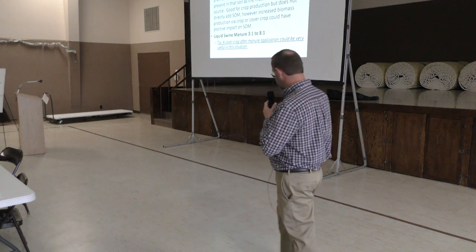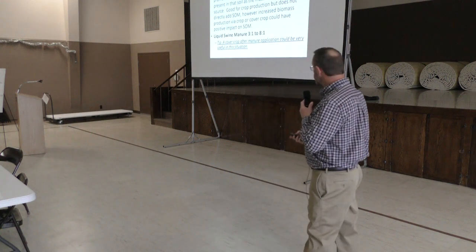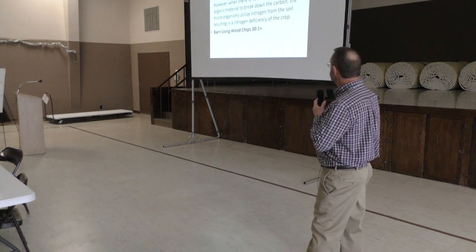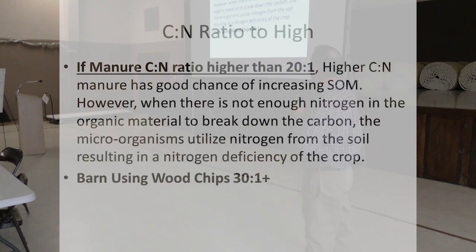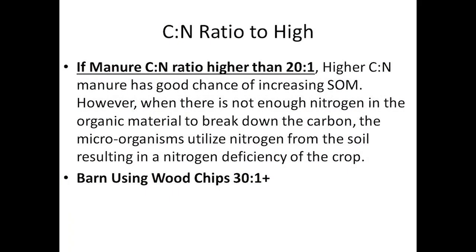If we're using something that's got a really low ratio and you want to truly build organic matter, you're going to need to figure out another way to introduce more carbon back into it besides just the manure itself. On the other end of the spectrum, we can have a ratio that's too high — typically over 20 to 1.